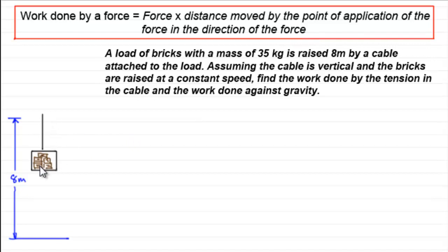So what we've got here is an example where we've got a load of bricks, which we're going to treat as a particle with a mass of 35 kg. And it's raised 8 m by a cable attached to the load. And assuming that the cable is vertical and the bricks are raised at a constant speed, we've got to find the work done by the tension in the cable and the work done against gravity.